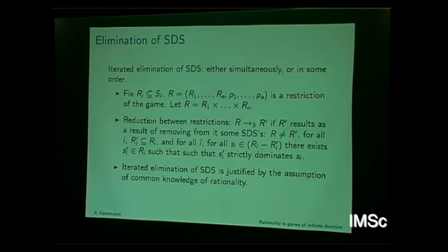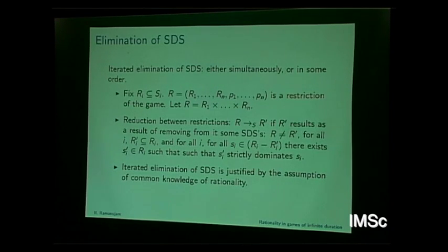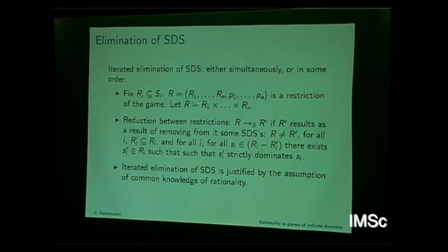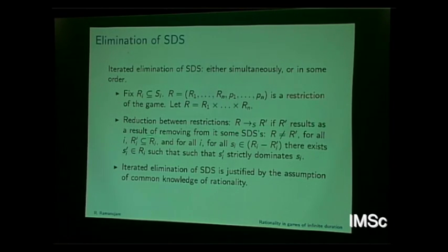The basic procedure is to iteratively remove strictly dominated strategies. Because the player is never going to play that, you might as well get rid of it, then look at the reduced game — again there may be some strictly dominated strategies, and you keep doing this. You talk about a restriction of the game for every player having some smaller set, and a reduction relation where S strictly reduces to S prime as a result of removing some strictly dominated strategies.